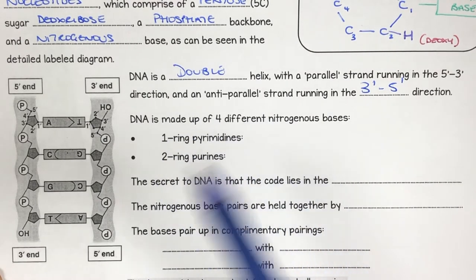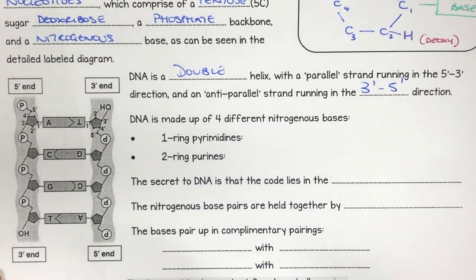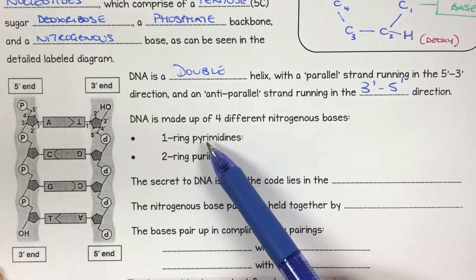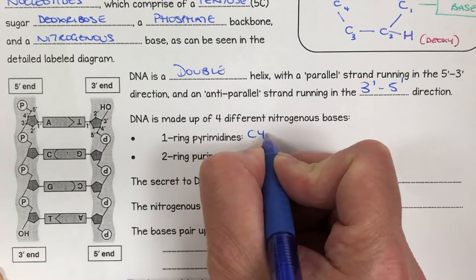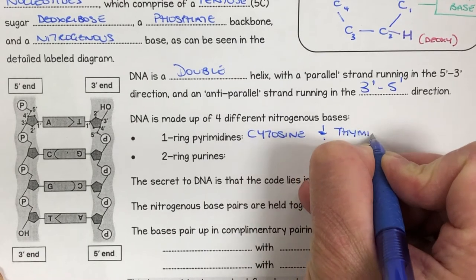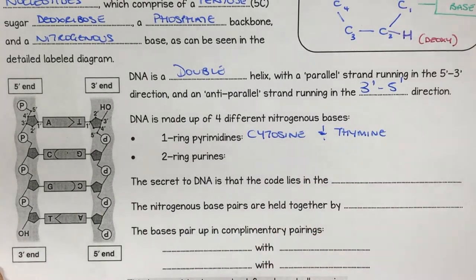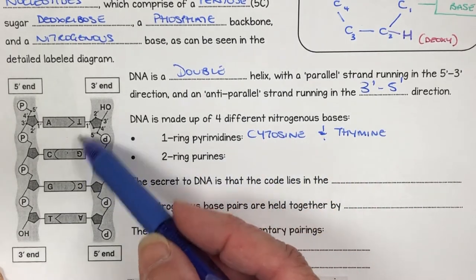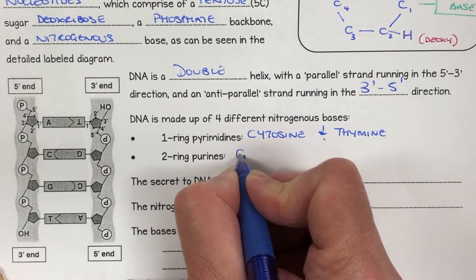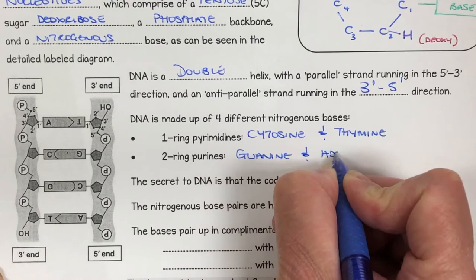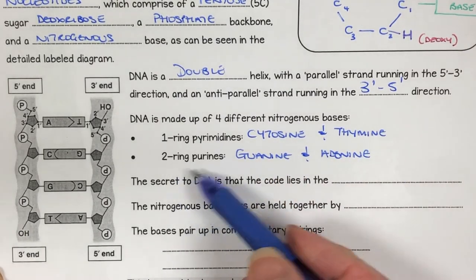DNA has four different nitrogenous bases — remember these: A, T, G, C. Two of them are one-ring pyrimidines, and these are cytosine and thymine. This makes these two a little bit smaller. The other two, guanine and adenine, have two rings so they're slightly larger — these are the two-ring purines.